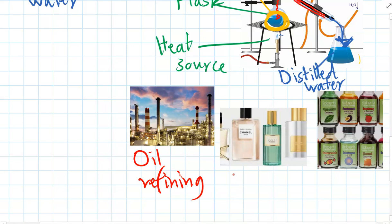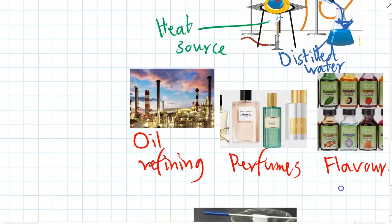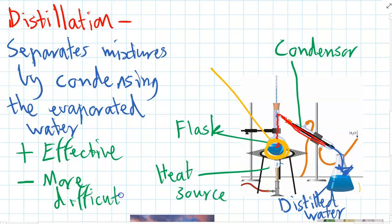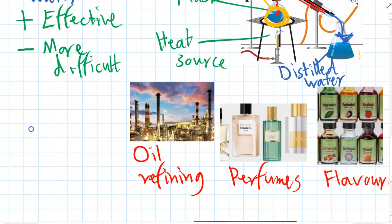But distillation is also used for separating out particular chemicals. And these can be used in things like perfumes to isolate particular chemicals that smell good to put into perfumes. And we can also collect certain chemicals to use as food flavours as well. So the benefits of distillation are it purifies and perfectly separates your mixture. So it's very effective. The negative, it's more difficult than some of the simple methods like decanting.